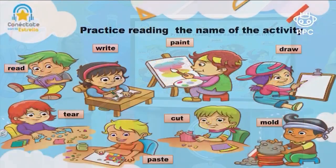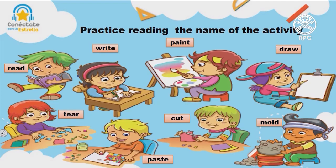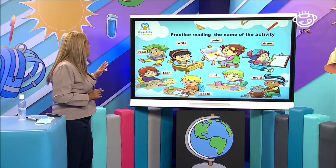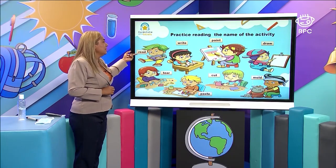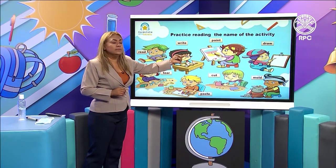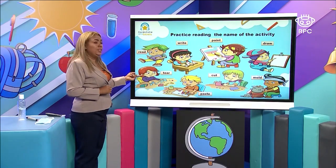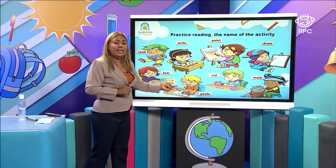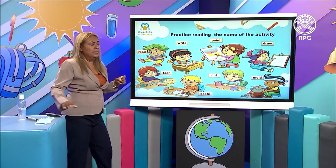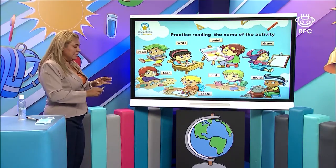Here we have a practice. Let's read the name of the activity. Do you see different pictures? They are doing different things — different actions. And those actions represent activities that we usually do in our online classroom. For example, you say: read, write, paint, draw, tear, paste, cut, mold. So these are our lists. Let's practice.